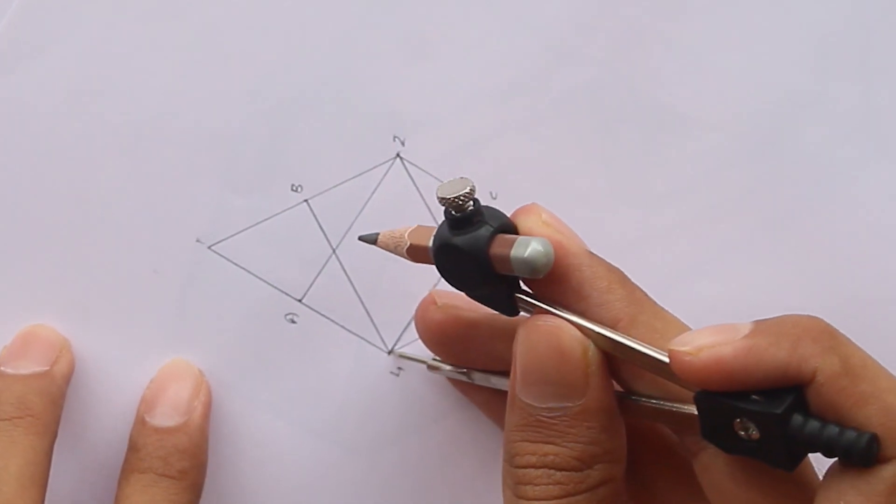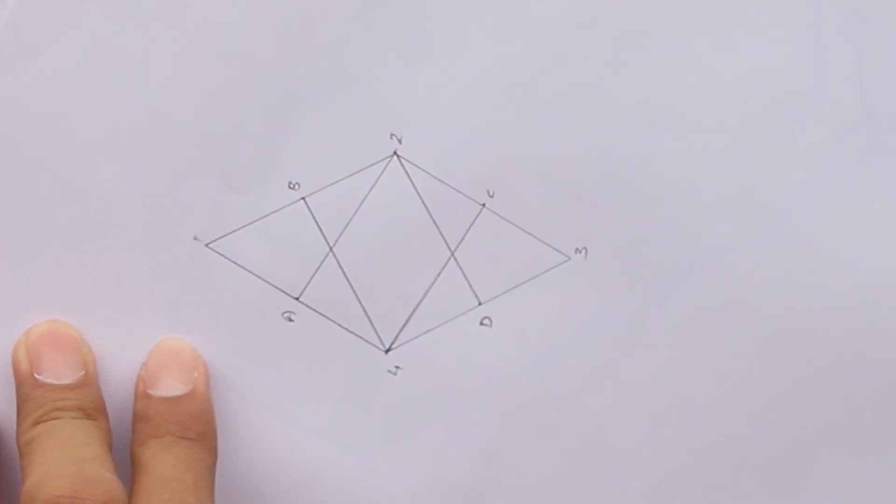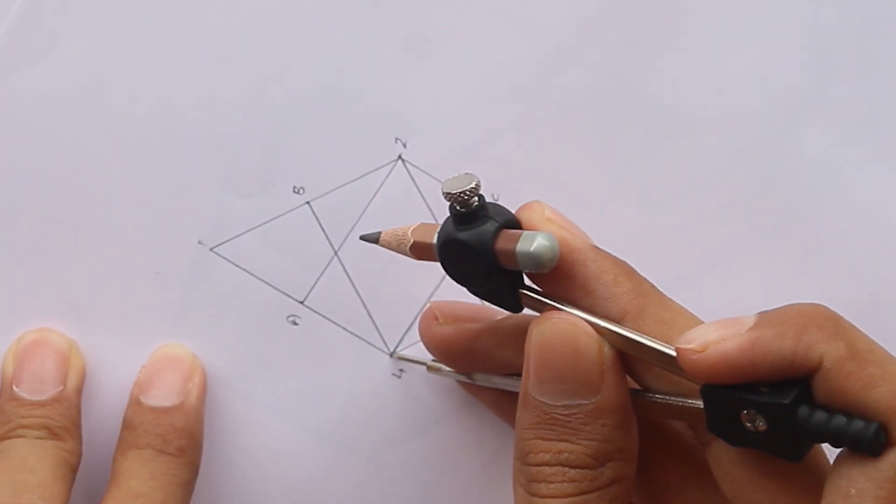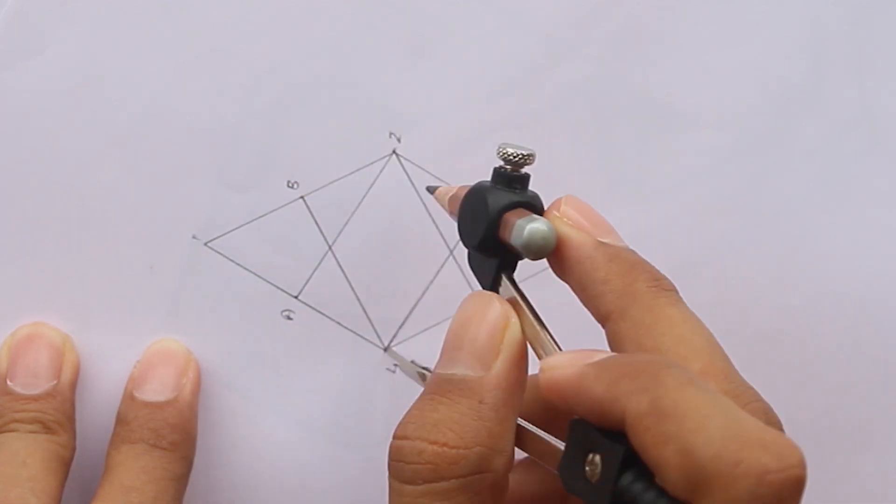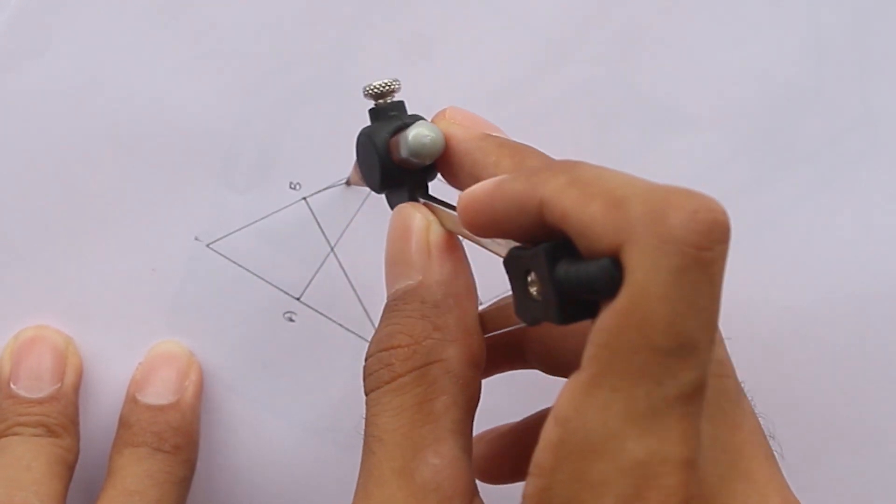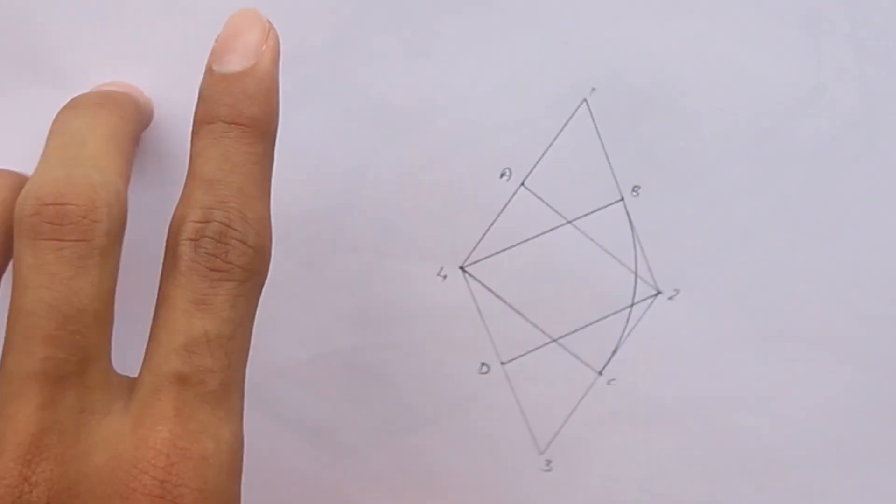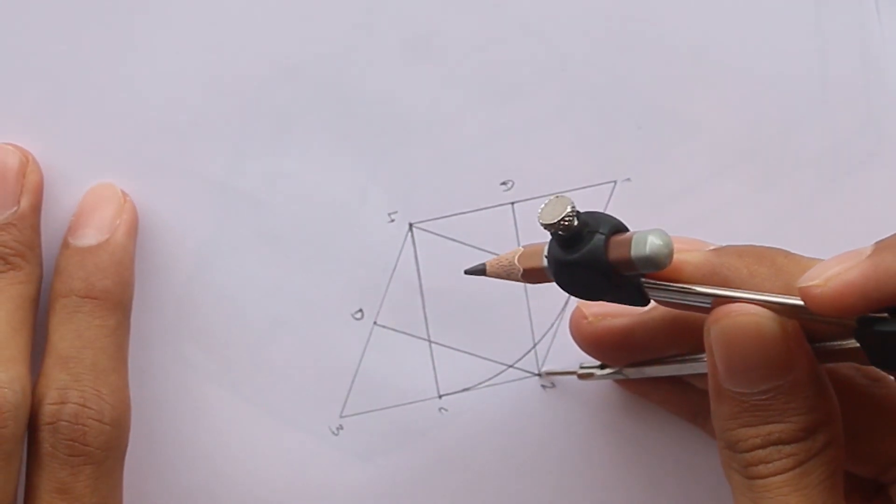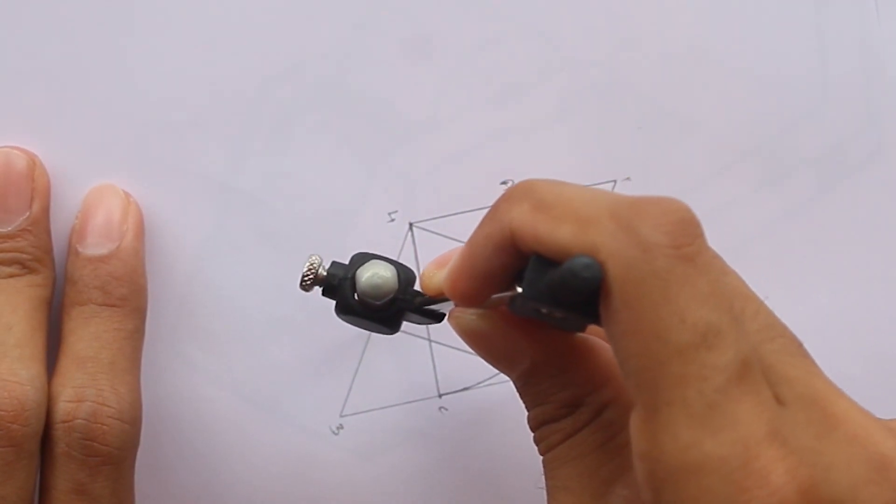Next, take the compass. Place it on point 4 and join B and C. Same on the opposite side, place the compass on point 2 and join D and A.